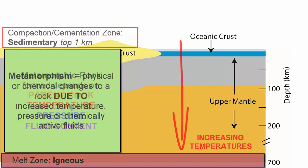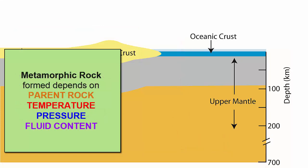The metamorphic rocks that form under these changed conditions depend on the original parent rock chemistry, the exact pressures and temperatures to which the rock was subjected, and the amount of water available for chemical reactions.